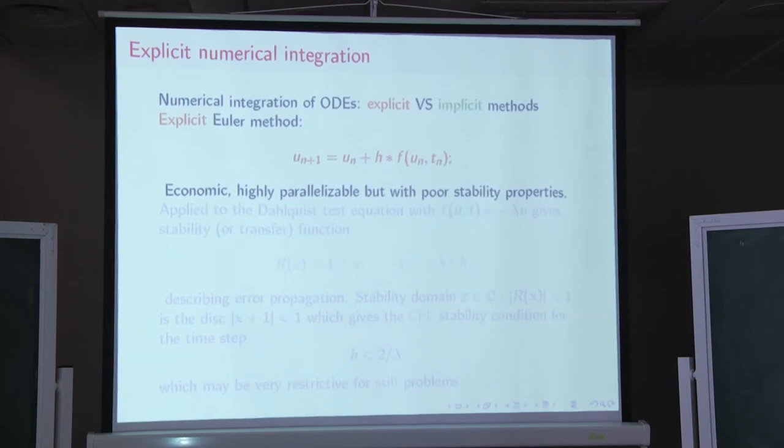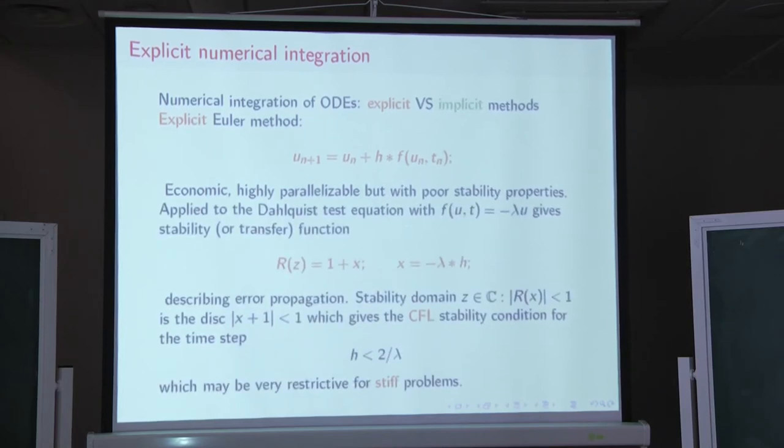But unfortunately, the explicit methods usually have very poor stability properties. For instance, if we apply this scheme, this numerical scheme to the so-called Dahlquist test equation, which is merely this one, it emulates, and in fact, lambda here emulates the eigenvalue of the Jacobian matrix related to this mapping F evaluated at a solution.